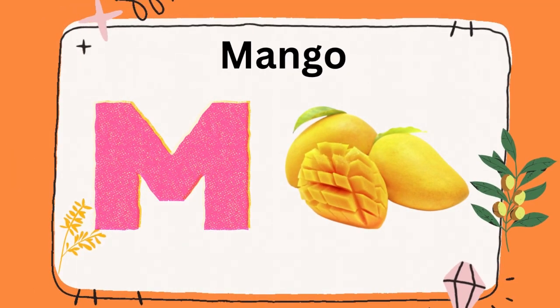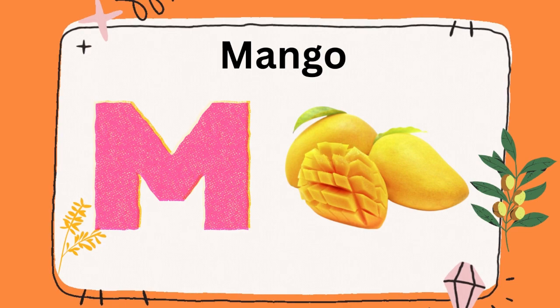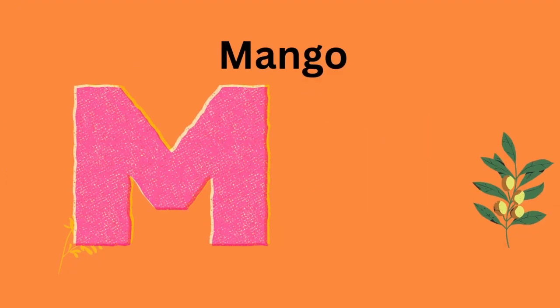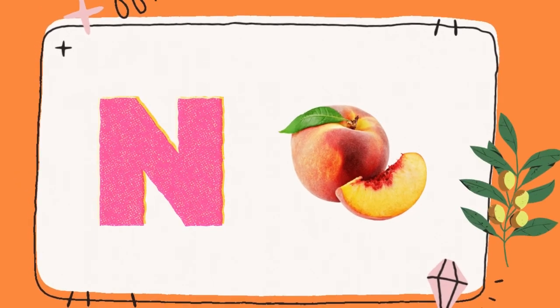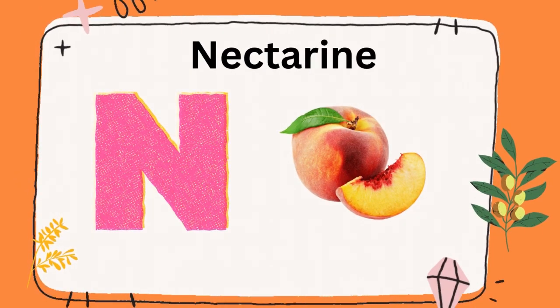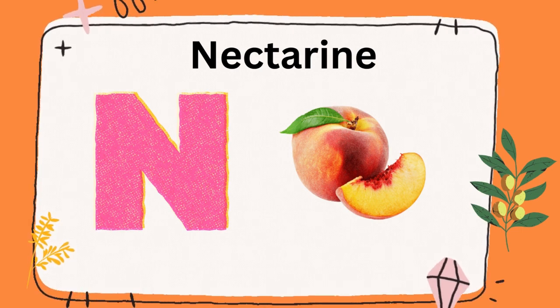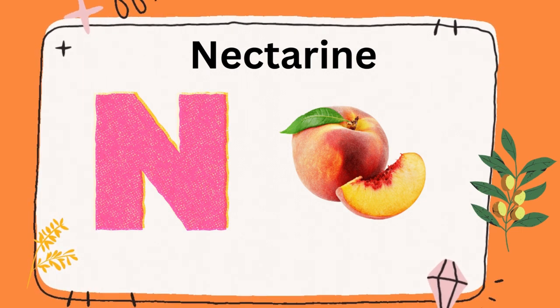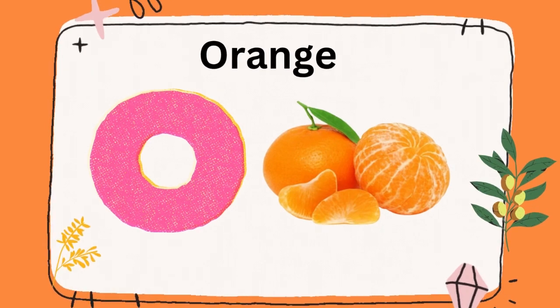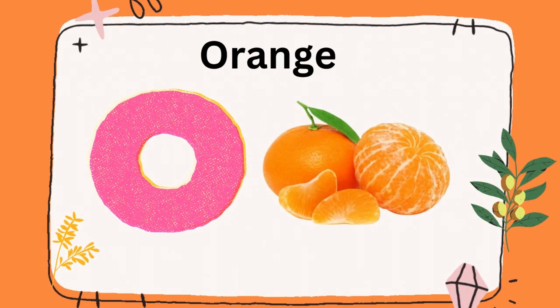M is for mango, mango. N is for nectarine, nectarine. O is for orange, O is for orange, orange.